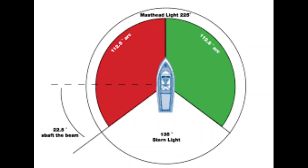For better understanding, you can see the image being shown here. The masthead light covers 225 degrees, going two points — 22.5 degrees — beyond the beam. The sidelights also match this: port side 112.5 degrees and starboard side 112.5 degrees, each going 22.5 degrees beyond the beam. The remaining area on the stern side is covered by the stern light at 135 degrees. This whole circle totals 360 degrees.